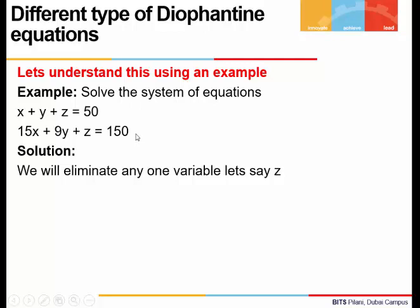We have two equations in this system in three unknowns x, y, z, and we have to solve for x, y, z. We will pick up one variable—here let's say we picked up z—and we will eliminate that from both equations. So from the first equation we can see z is 50 minus x minus y.